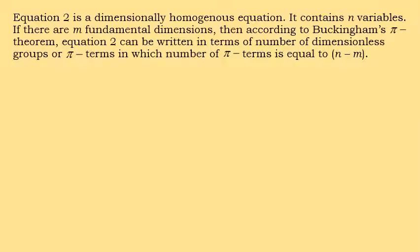Equation 2 is a dimensionally homogeneous equation, meaning the left-hand side and right-hand side of the expression are dimensionally the same. It contains N variables, and if there are M fundamental dimensions, then according to the Buckingham Pi theorem, equation 2 can be written in the form of N minus M dimensionless Pi terms.